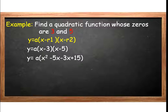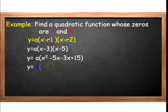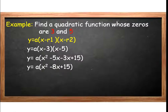Applying the FOIL method: x times x is x squared, x times negative 5 is negative 5x, negative 3 times x is negative 3x, and negative 3 times negative 5 is positive 15. Combining like terms — negative 5x and negative 3x — we have negative 8x. Thus, the final answer is y is equal to a times the quantity x squared minus 8x plus 15.